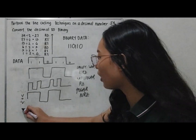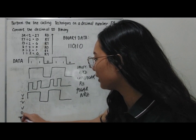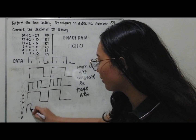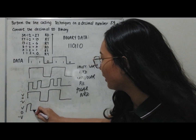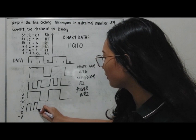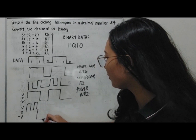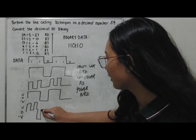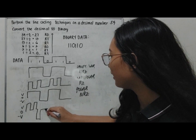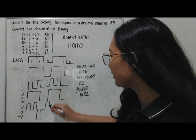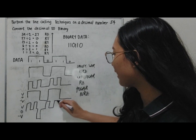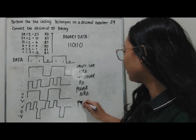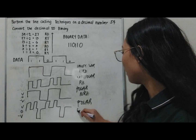For the polar RZ of decimal 54: half bit positive back to zero, another half bit positive back to zero, then positive half bit, positive half bit, positive half bit back to zero, then negative half bit back to zero. This is the polar RZ waveform.